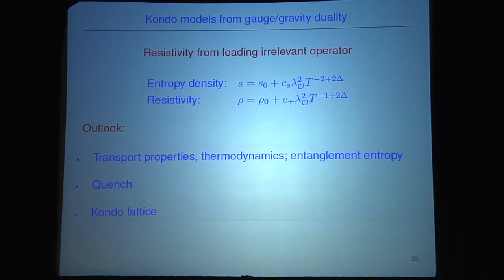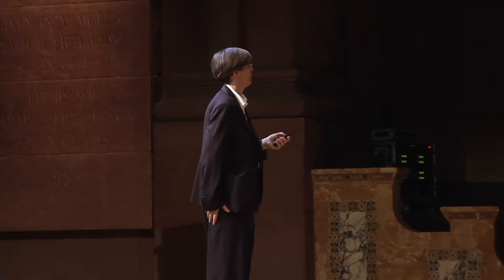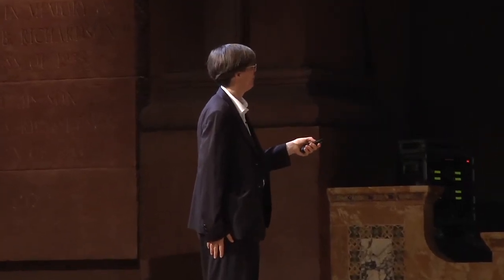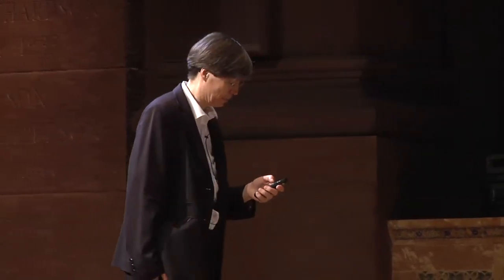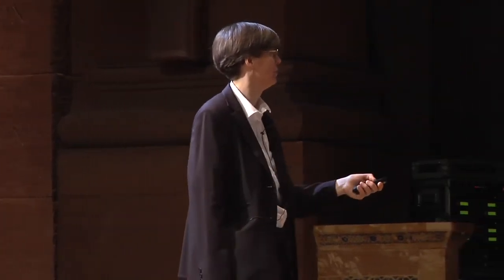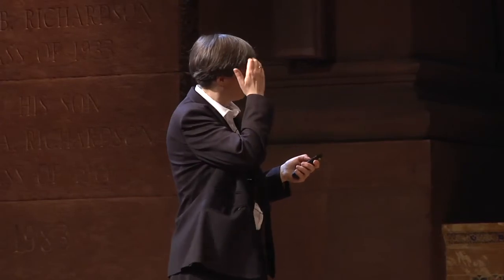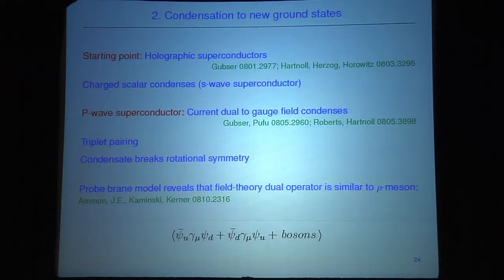That brings me to the end of the first example. The second example concerns condensation to new ground states. The starting point is to consider holographic superconductors: the easiest form is the s-wave superconductor where a charged scalar condenses. There are also p-wave superconductor models where a current dual to a gauge field condenses, giving some form of triplet pairing — and most importantly the condensate breaks rotational symmetry.